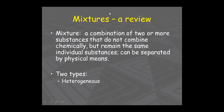For example, if you mix sand and salt together, that is called a mixture. There is no fixed ratio in a mixture. Because they do not combine chemically, there is no chemical reaction, so the individual substances can be separated by physical methods. Mixtures are of two types: homogeneous and heterogeneous.